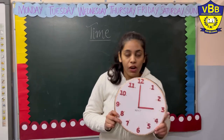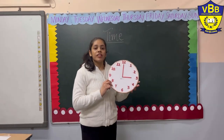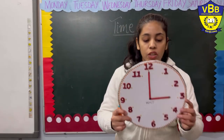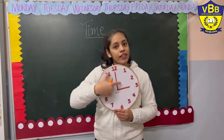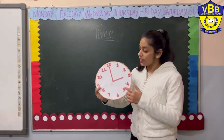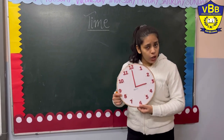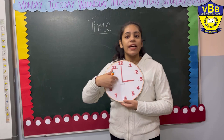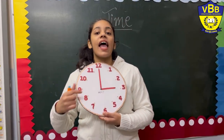To keep a record of the time, we need a clock. Now, as you can see, this is a clock. How many numbers are there? There are 12 numbers in the clock. And in the middle, can you see these two? These two are known as hands.